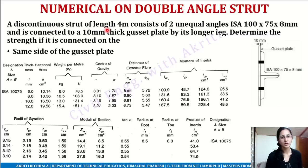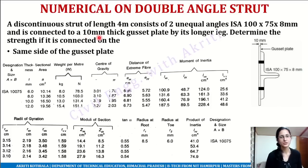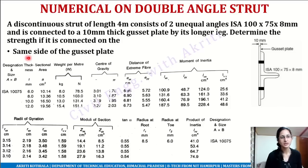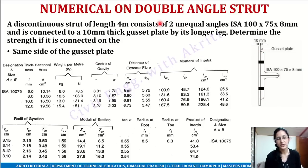A discontinuous strut of length 4 meters consists of two unequal angles 100 by 75 by 8 mm, connected to a 10 mm thick gusset plate by its longer leg. Determine the strength if it is connected on the same side of the gusset plate. Same side of the gusset plate means both angles are placed on the same side, and they are arranged in this manner.